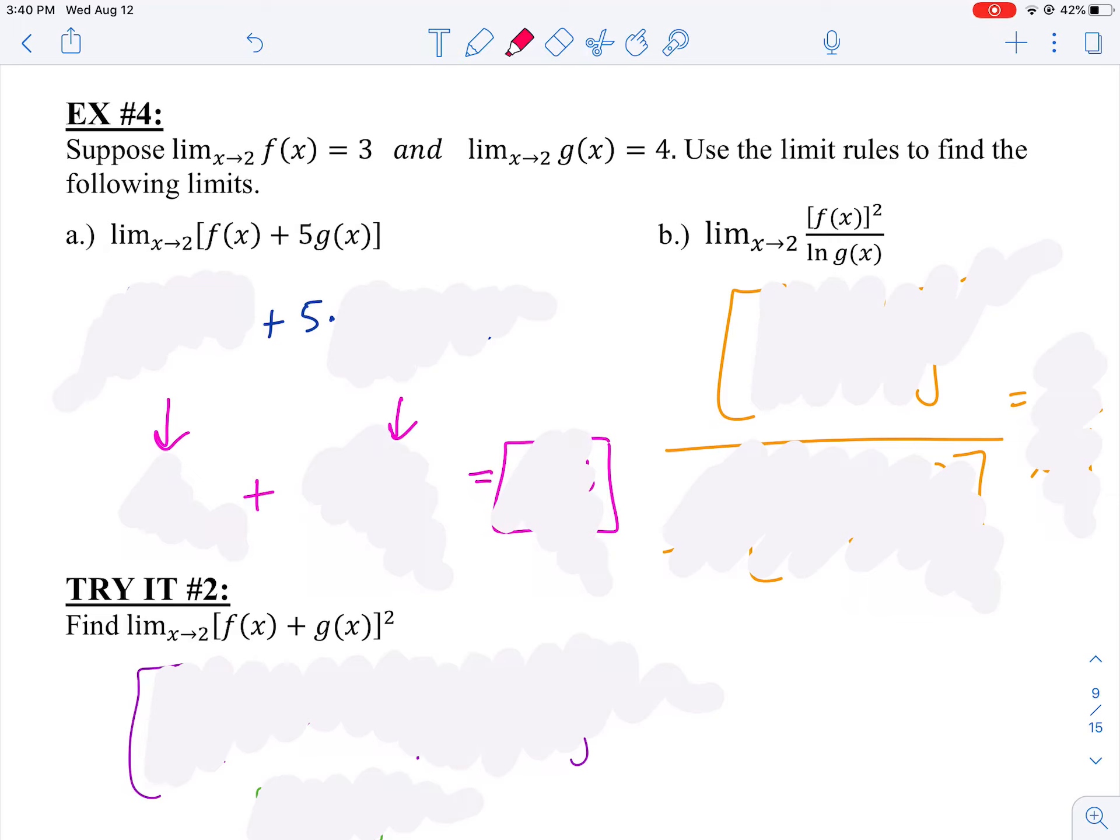Well, our limit rules say we don't really have to know and we can break these up into little pieces. Instead of this big old problem all at the same time, what I can do is evaluate the limit of each little piece. I can first figure out what the limit is as X approaches two of F(X). Then I can figure out what the limit is as X approaches two of G(X) and multiply that answer by five.